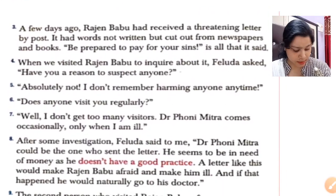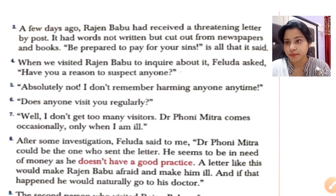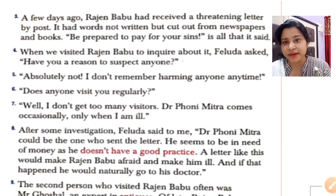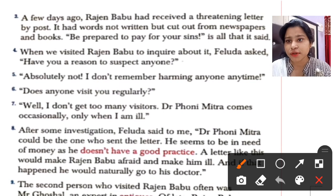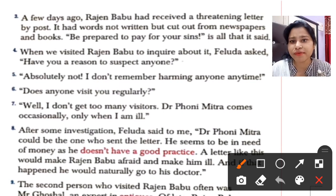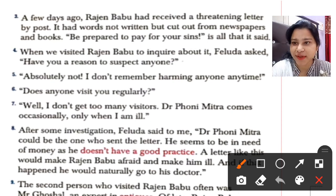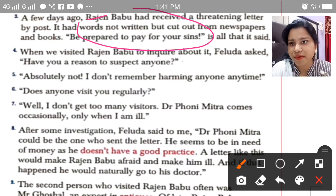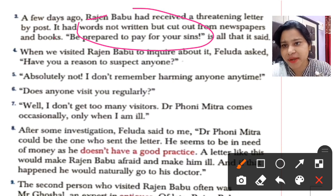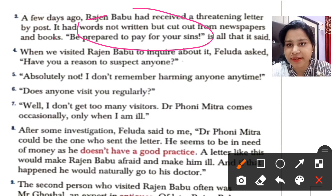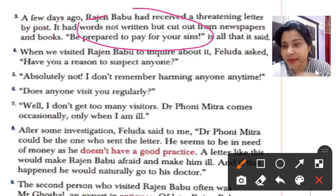Now page number 42, paragraph three: a few days ago Rajin Babu had received a threatening letter by post. The letter had words not written but cut from a newspaper and book, saying: 'Be prepared to pay for your sins.' So he received a newspaper cutting letter threatening him to pay for his sins. That was the threatening letter Rajin Babu received by post.